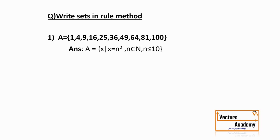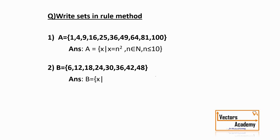Now set B = {6, 12, 18, 24, ..., 48}. If you look at these numbers, they are the numbers in the table of 6 — 6 ones, 6 twos, 6 threes, and so on. So we are representing all the multiples of 6. Set B = {x | x = 6n, where n is a natural number}. The value of N is 1, 2, 3, 4 and so on, and multiplying by 6 gives us the table of 6.